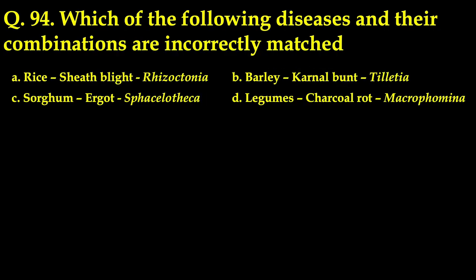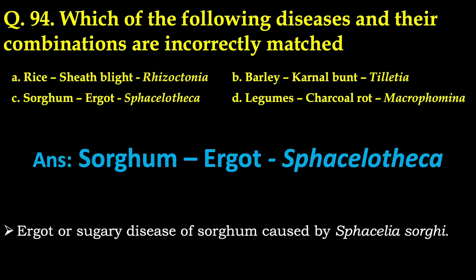The next question: which diseases and their combinations are incorrectly matched? The correct answer is option C — Sorghum ergot and Sphacelotheca. Ergot disease, also known as sugary disease of Sorghum, is caused by Sphacelia sorghi, not by the genus Sphacelotheca. The genus Sphacelotheca causes smut disease in Sorghum. Head smut, grain smut, and loose smut of Sorghum are caused by Sphacelotheca reiliana, Sphacelotheca sorghi, and Sphacelotheca cruenta, respectively.